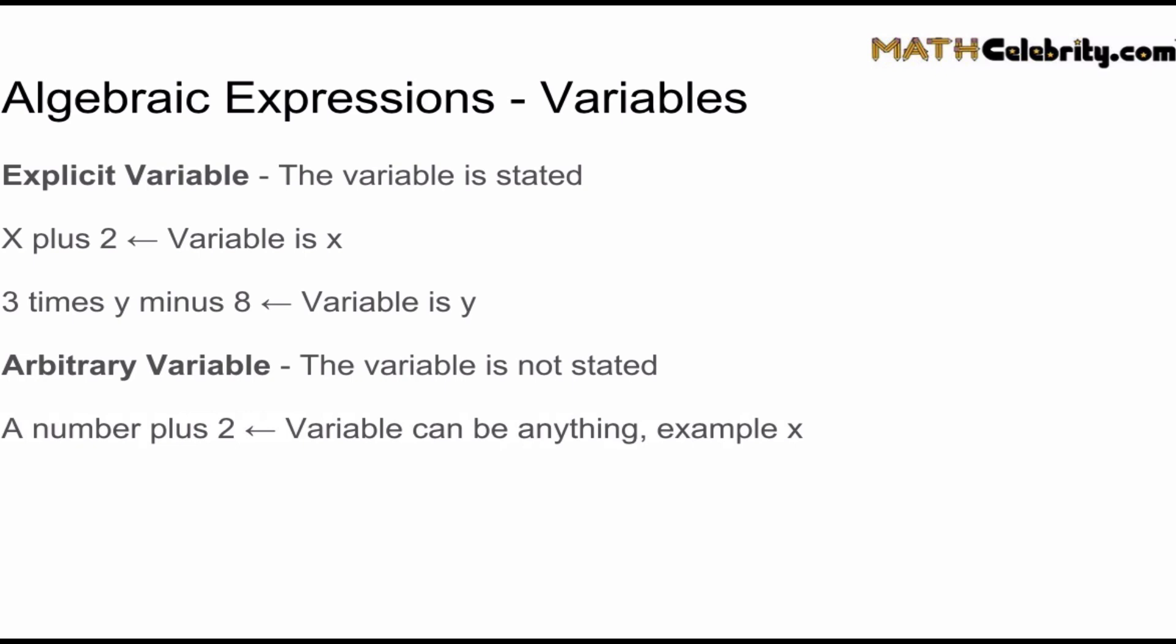But you can choose any variable you feel comfortable with. So x, y, w, a, it's up to you. And then here's another example of an arbitrary variable. So 3 times an unknown number minus 8. Well, an unknown number is the definition of a variable. So once again, your variable can be anything you choose. As an example, y.